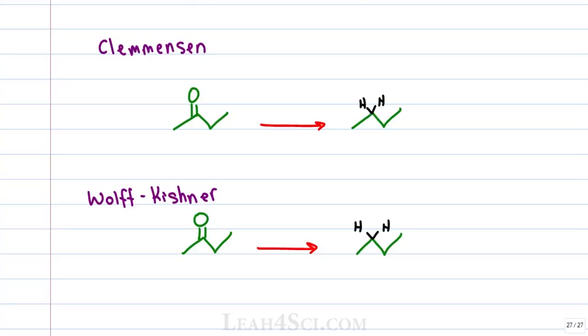The difference between the two reactions are the reagents and conditions. Clemmensen reduction uses zinc with mercury in an HCl catalyst and Wolff-Kishner reduction uses hydrazine which is written as H2NNH2 but you can also see it written as N2H4 and this one has a base catalyst like KOH and that's the key difference.